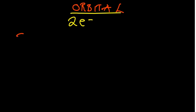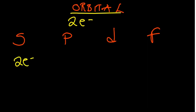We have a few orbitals to understand: the s orbital, the p, the d, and the f — commonly known as the spdf orbitals. The s orbital accommodates a maximum of two electrons, the p orbital a maximum of six electrons, the d orbital a maximum of 10 electrons, and the f orbital a maximum of 14 electrons. Notice there's a difference of four electrons each.